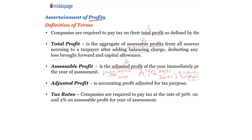We said assessable profit is the adjusted profit. So, the question is, what is an adjusted profit? An adjusted profit is accounting profits — this is profit number four — accounting profits adjusted for tax purposes. Later on, we will see why we have adjusted profits for tax purposes.